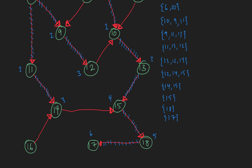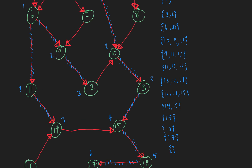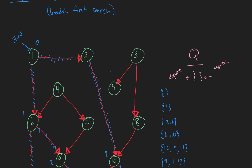When we dequeue 17, there's nothing to enqueue. Our queue is now empty, and we are done with our search from the first node.